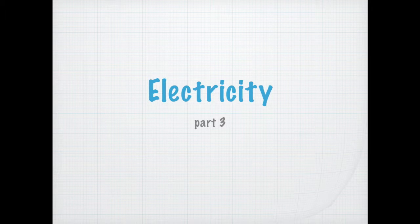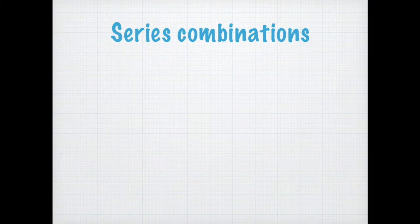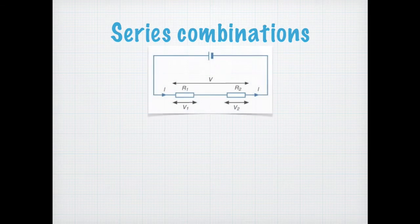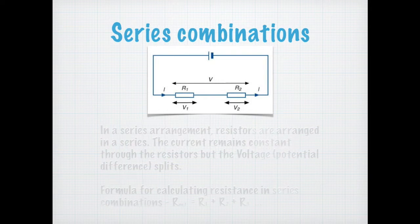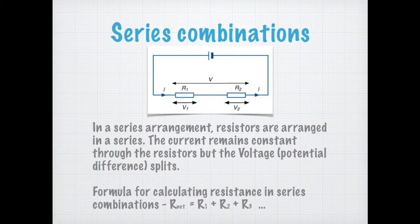Let's move on to series combinations. There are two types of combinations in which resistors can be placed. The first one is a series combination. So this is what a series combination looks like. In this combination, resistors are placed basically in series with each other.